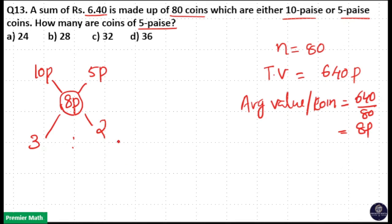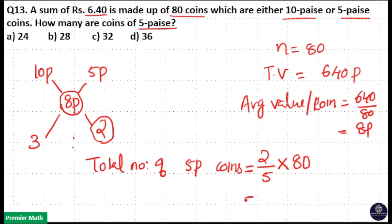That means total number of 5 paise coins is equal to 2 divided by 5 into total number of coins, which is 80. So 2 by 5 into 80 will give you 16 into 2, which equals 32. That's the total number of 5 paise coins. So option C is your answer.